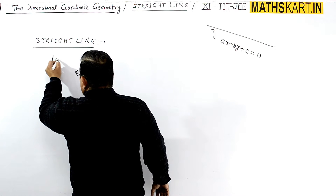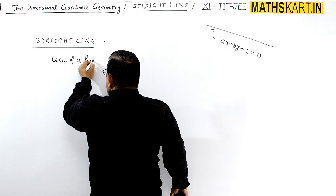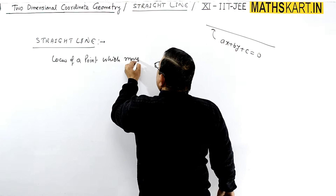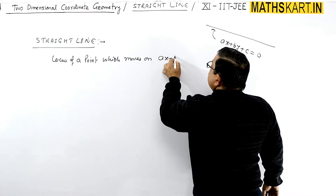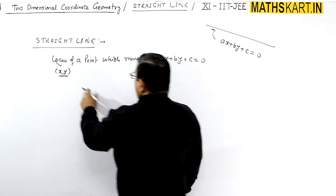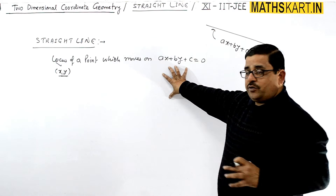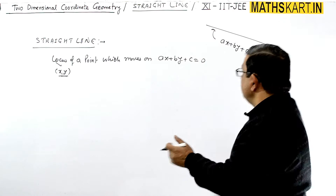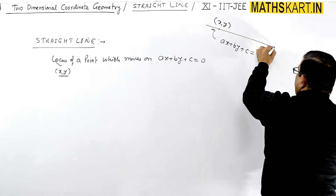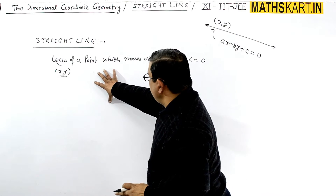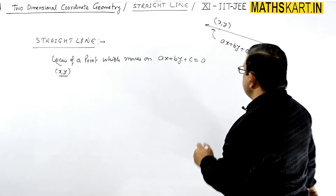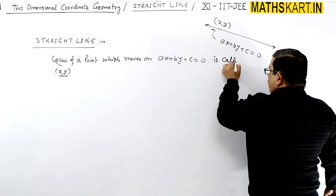The locus of a point which moves on ax + by + c = 0 — that general point (x, y) is following this condition, moving into the line and making the straight line. So the locus of a point which moves on this equation is called a straight line.